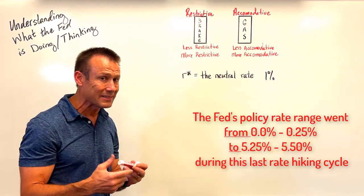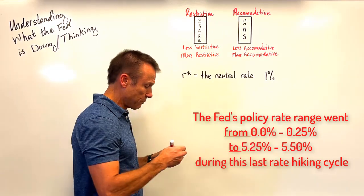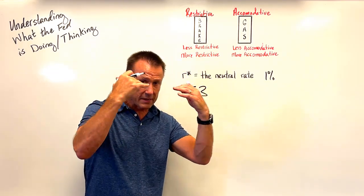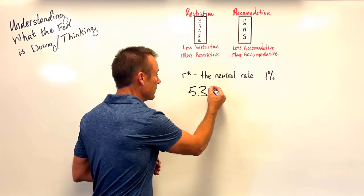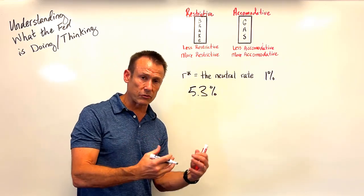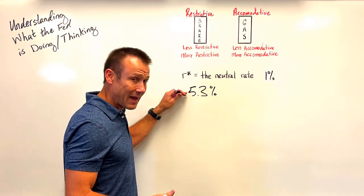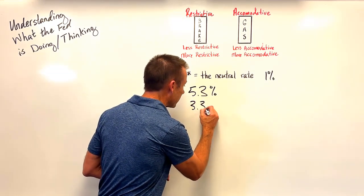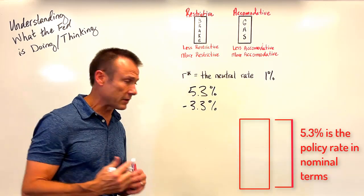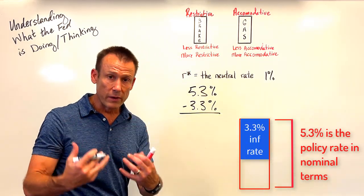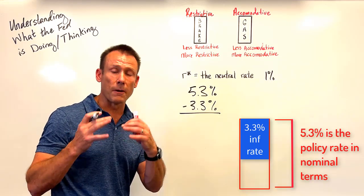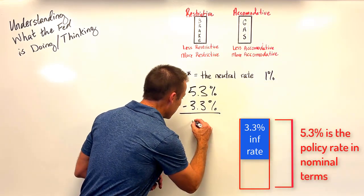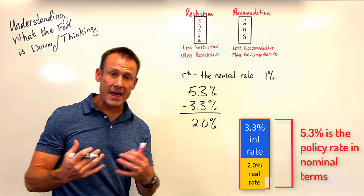What we need to do with nominal interest rates is subtract off the inflation rate. When they got there — about 14 months ago — the inflation rate was 3.3%. Subtracting that gives us what we really want: the real interest rate, or the policy rate in real terms. That gives us 2.0%. The neutral rate (R-star) is estimated at around 1%, so their real policy rate was a full percentage point above neutral — they were restrictive.